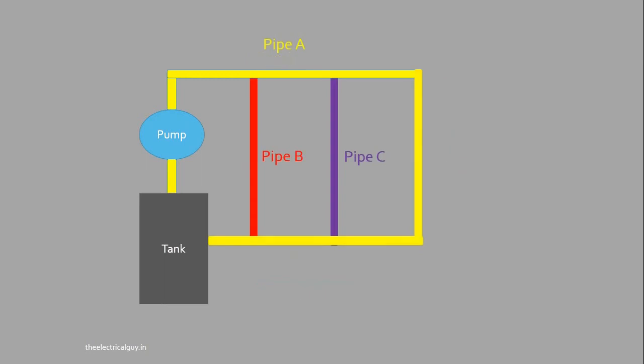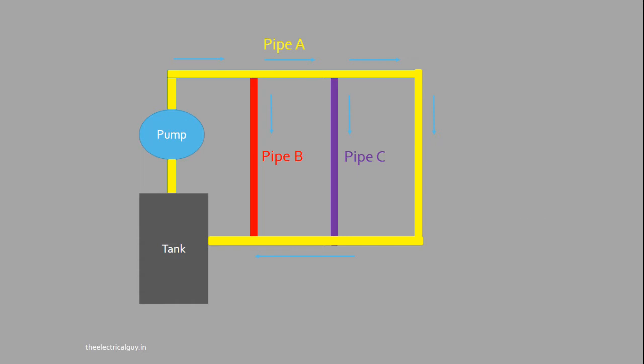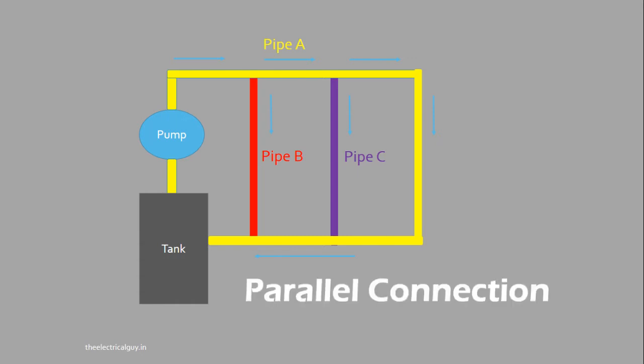Now if the pipes are connected the other way, water flows through pipe A, then some part of water gets divided into pipe B and the remaining continues in pipe A. Again it gets divided into pipe C and the remaining continues in pipe A. There are multiple flows of water in this type of connection and the quantity of water may be different in all three pipes depending on the size of the pipe — this is an example of parallel connection.